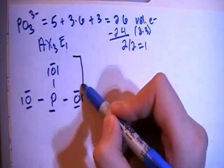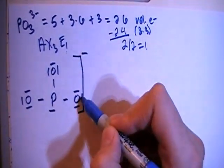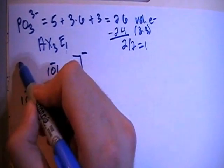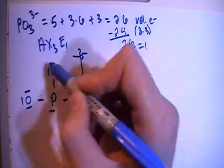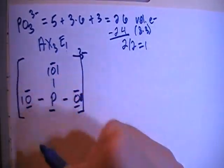Let's go ahead and put in our bracket, our braces, whatever you want to call it. Because this is a negative 3 ion, you have to put the bracket around the structure.